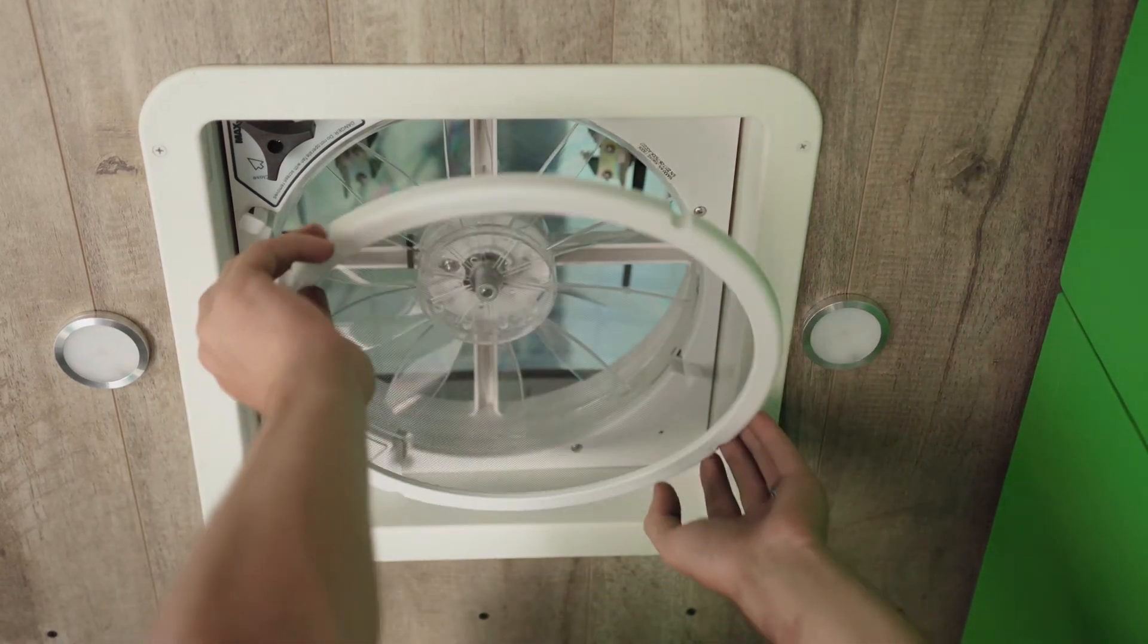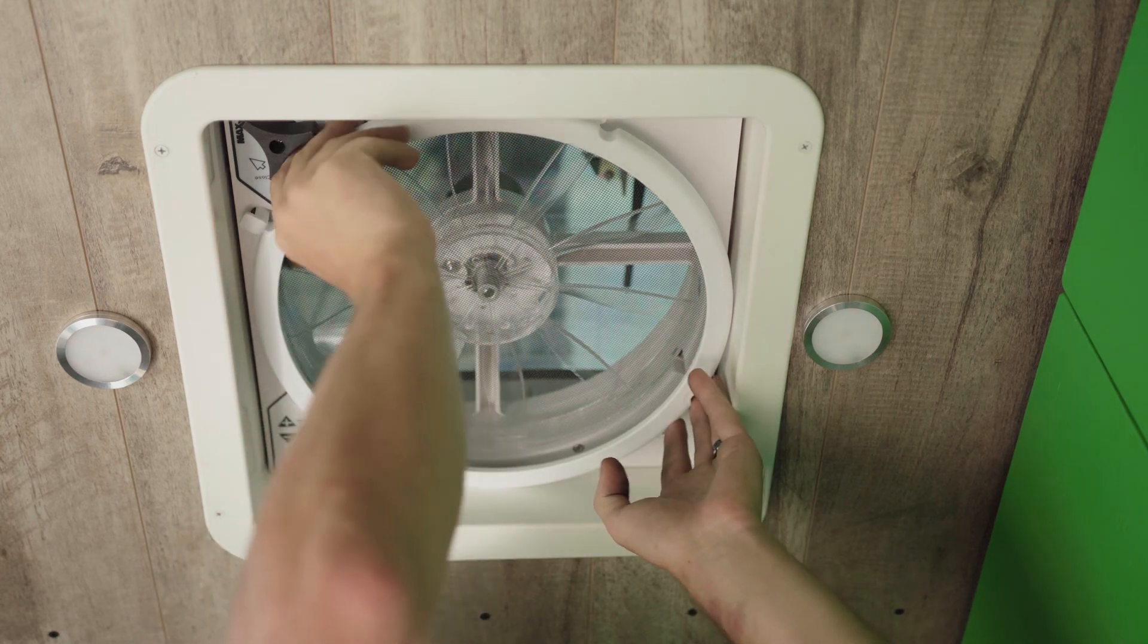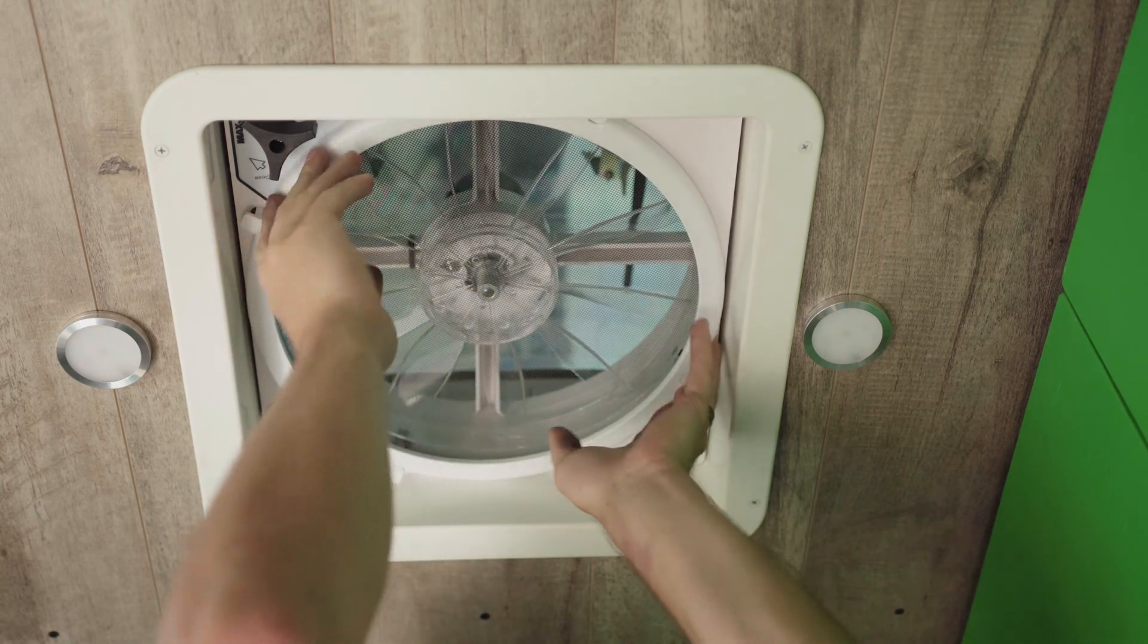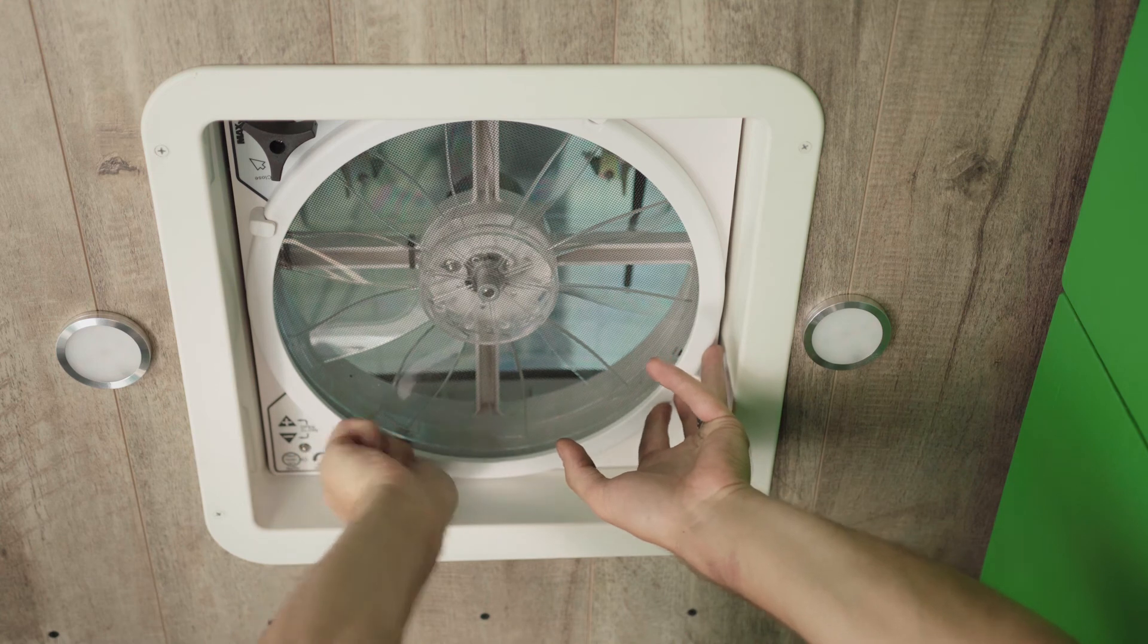Now we're going to put our bug screen back up. So align it with your four lock tabs. Twist them back in, reverse of how you pulled them out.